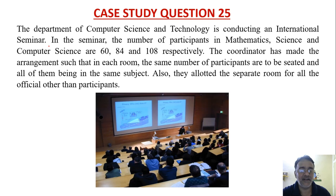In the seminar, the number of participants in mathematics, science, and computer science are 60, 84, and 108 respectively. The coordinator has made arrangements such that in each room the same number of participants are to be seated and all of them being in the same subject.